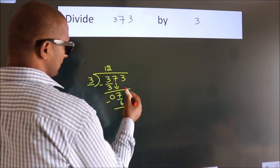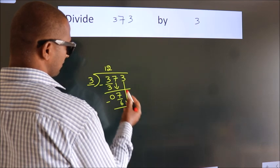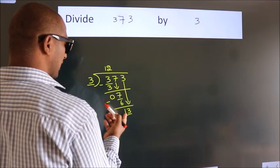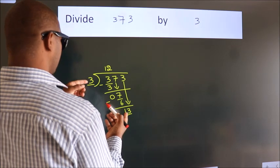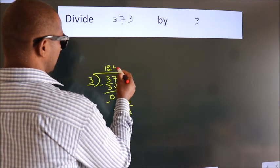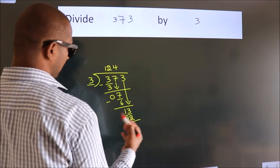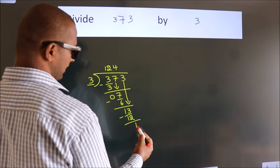After this, bring down the beside number, so 3 down, making 13. A number close to 13 in the 3 table is 3 times 4, which is 12. Now, we subtract and we get 1.